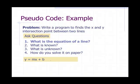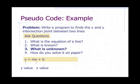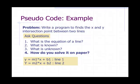So first question is, what's the equation of a line? It's y equals mx plus b, of course. What's known? We know the slope and we know the y-intercept. What's unknown? The y value and the x value. How do you solve this on paper? Well, what you got to do is you take line one and you take line two and you set them equal to each other and you solve for x and then you solve for y.